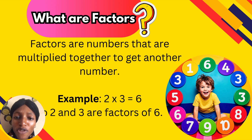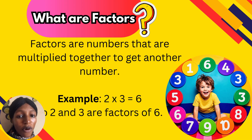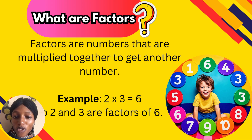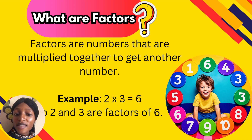What are factors? What do you understand by factors? Factors are numbers that are multiplied together — numbers that are multiplied together to get another number. Look at this example: 2 times 3. 2 times 3 are numbers multiplied together to give you 6. So 2 and 3 are factors of 6 because they are the numbers multiplied together to get 6.